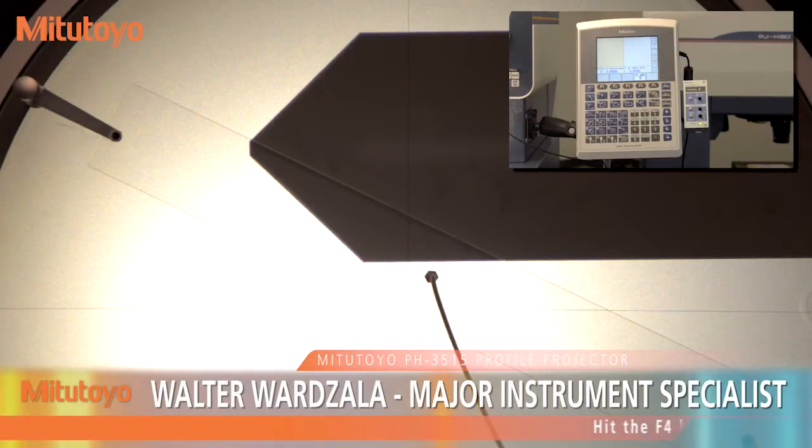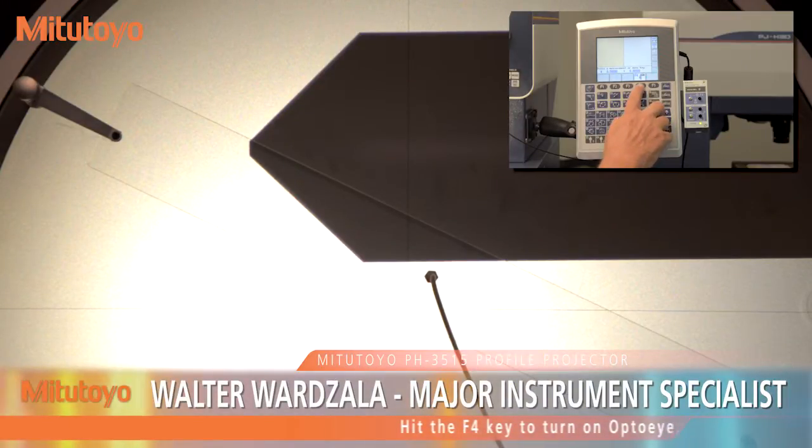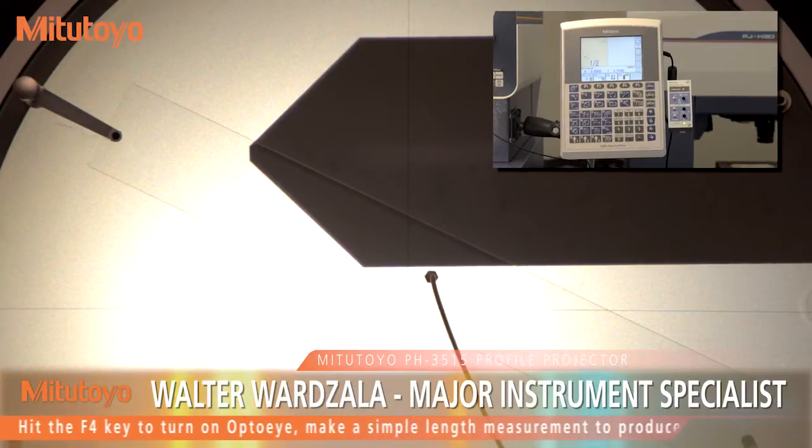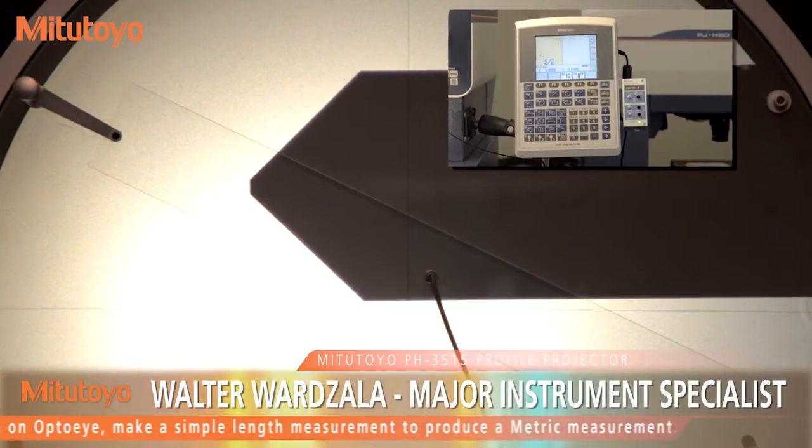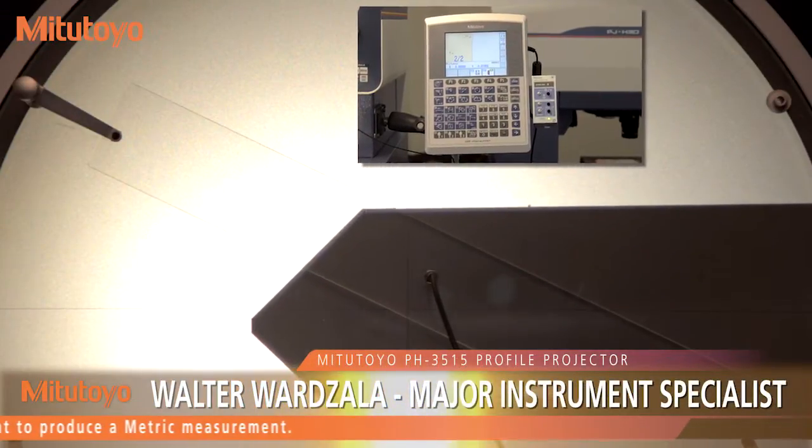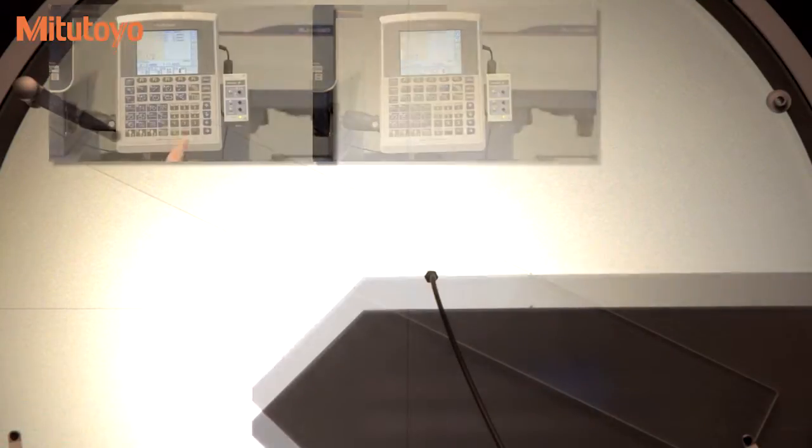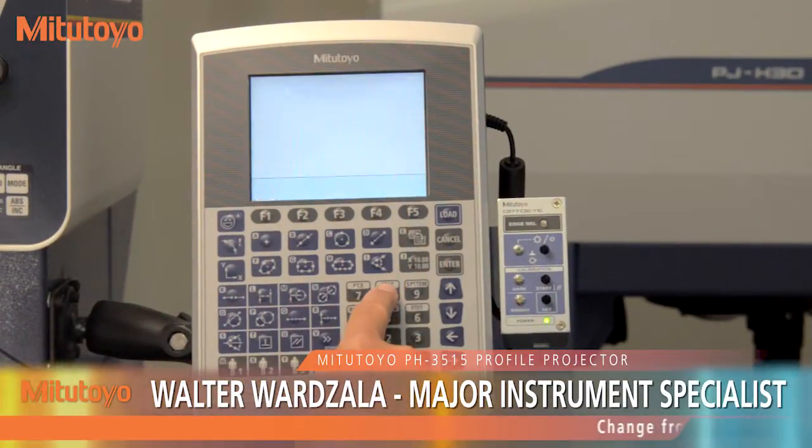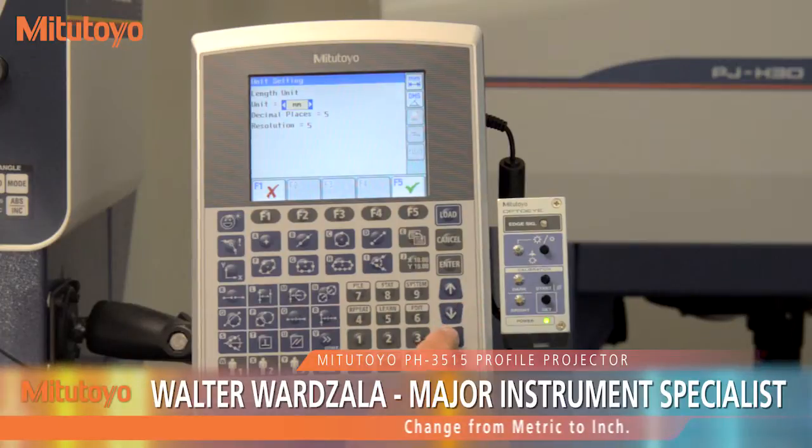Either inch or metric units can be used, as in this example of the diameter of a shaft. First, the shaft is measured in metric units by utilizing the line function. And then the units are swapped to inch in the menu and the part is re-measured.